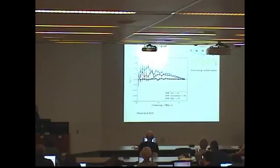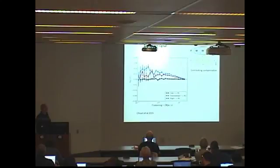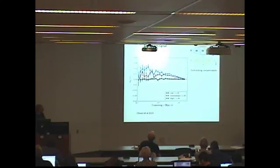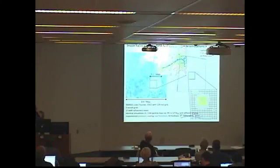I focused on the GI signal rather than the intrinsic alignment signal because we found a grid-locking contamination for spin-spin correlations. We see no signal for ellipticals and some alignment signal for spirals, but we're not convinced this isn't due to numerical effects.